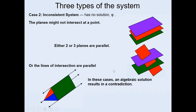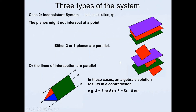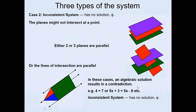When solving algebraically, an inconsistent system will result in a contradiction — for example, 4 equals 7, or 5x + 3 equals 5x − 8. When you end up with such a contradiction, this means the system is inconsistent and has no solution.